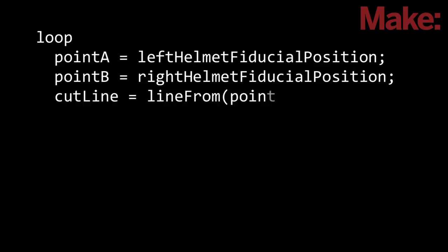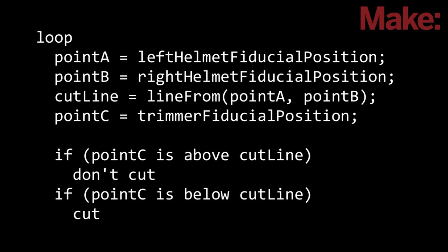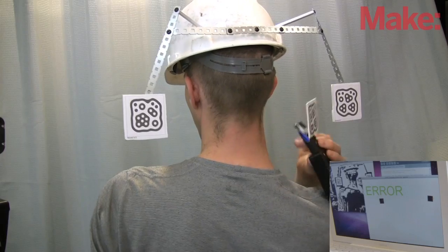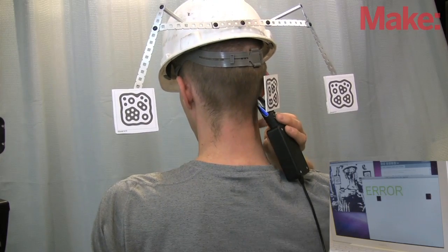Once the computer knows where the cut line is and where the trimmer is, it's a simple matter of turning the trimmer on whenever it goes below the cut line. Now for the final test. Cross your fingers.